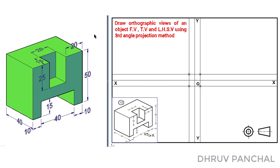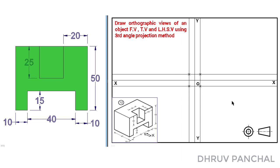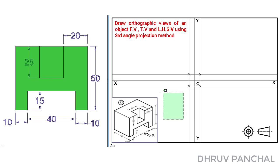Now let us observe the front view of the given 3D object with respect to direction of view. As per the given data, we have to draw a front view, top view, and left hand side view using the third angle projection method. In the case of third angle projection, we draw the front view in the third quadrant, the top view above the front view, and the left hand side view at the left side of the front view. So this is the first quadrant, second quadrant, third quadrant, and fourth quadrant.